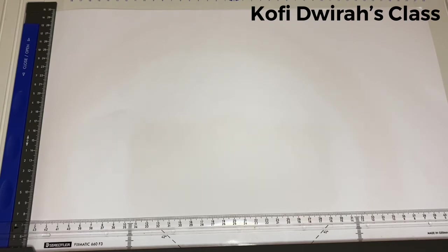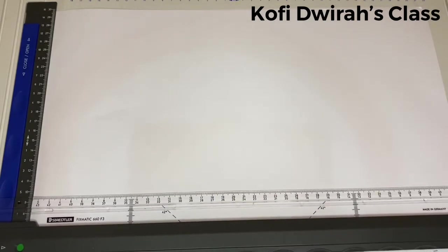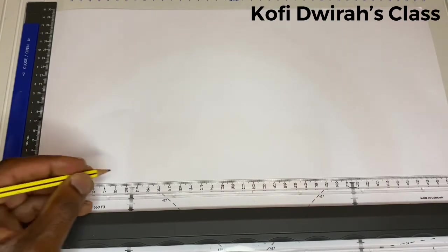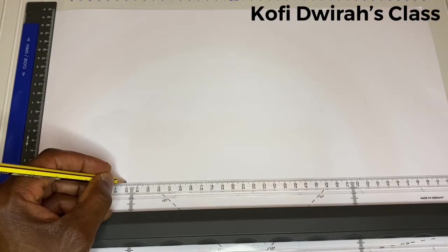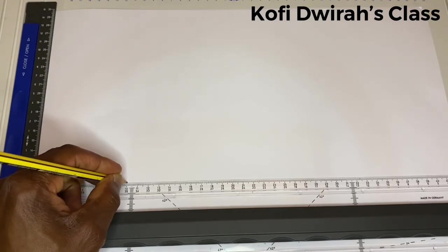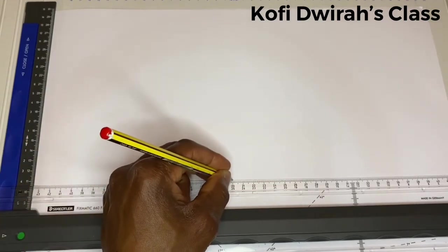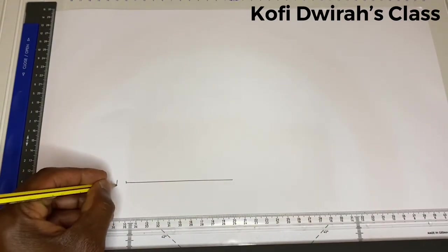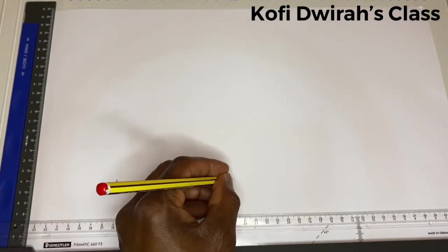So this is what we are going to do today. We are taking the first side AB to be 10 centimeters. So we draw our 10 centimeters — that is one side — giving us points A and B.